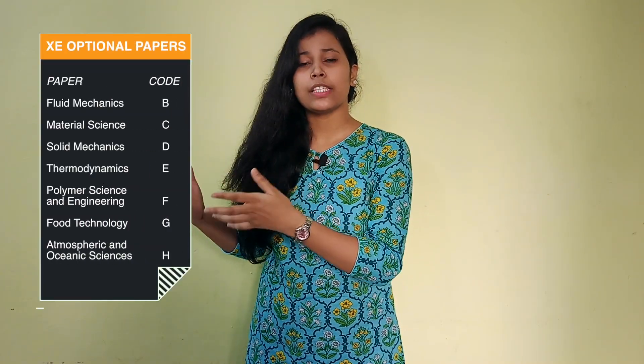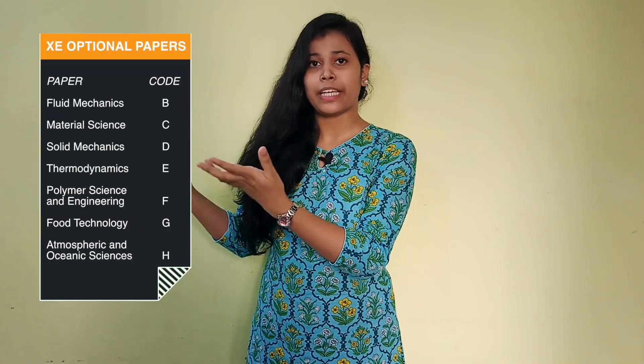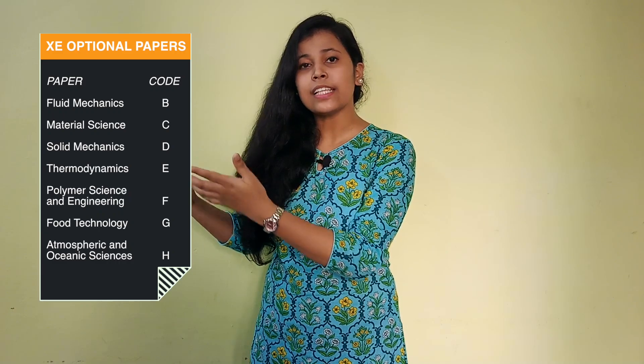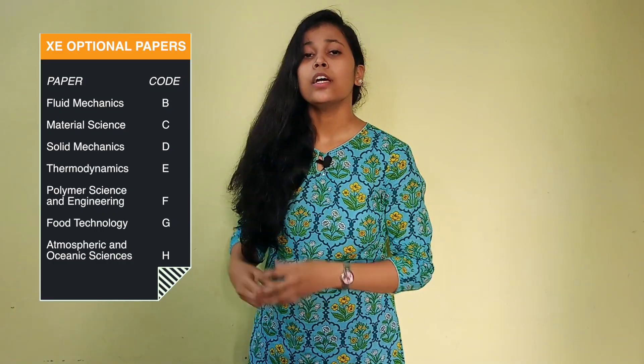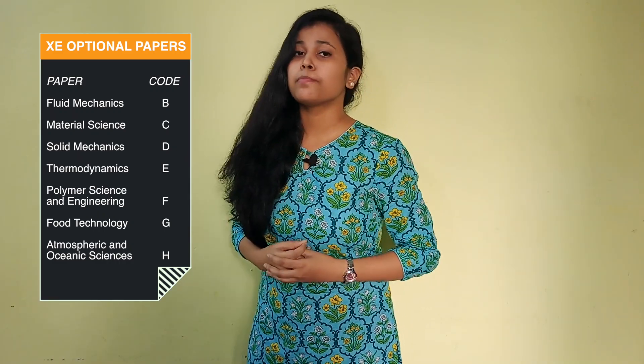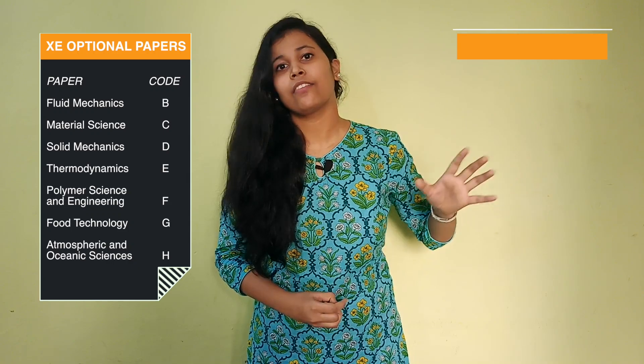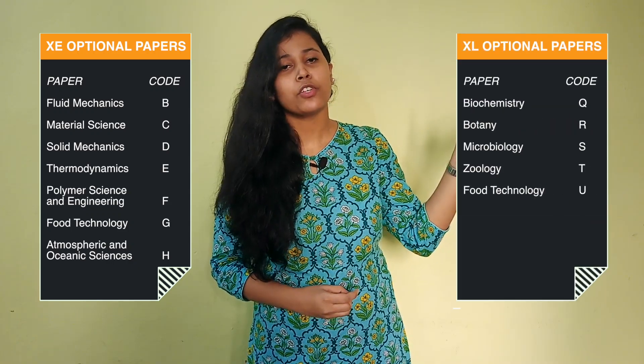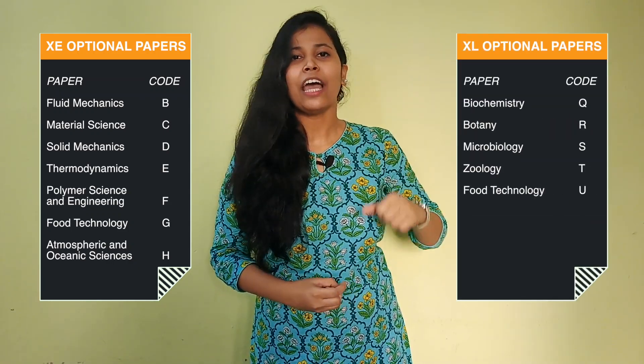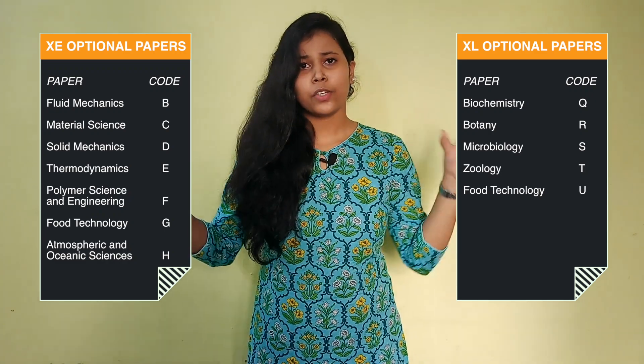For XE, there are seven optional subjects: fluid mechanics, material science, solid mechanics, thermodynamics, polymer science and engineering, food technology, and atmospheric and oceanic sciences. For XL, there are five optional subjects: biochemistry, botany, microbiology, zoology, and food technology. As you can see, these subjects are quite different. Out of these seven in XE and five in XL, we have to choose two optional papers.